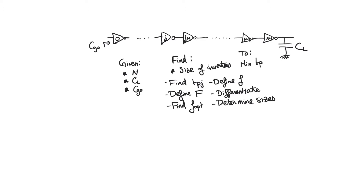Why is this problem interesting? First, we will see this kind of structure used a lot when we need to drive a very large capacitance — for example, in clock networks or in driving power rails. But also because it forms the foundation upon which we will base the approach we use to size more complicated logic gates.